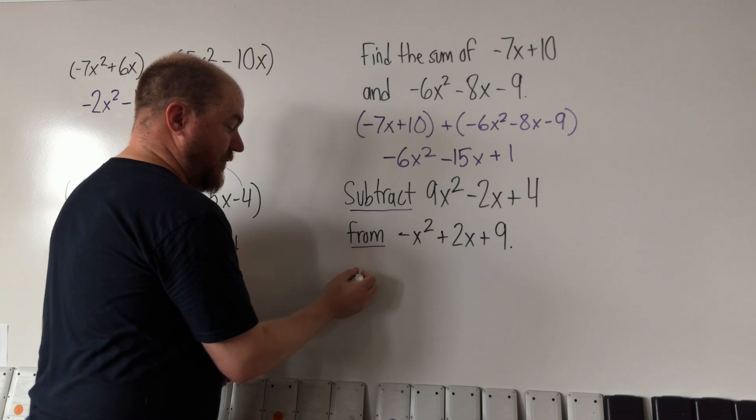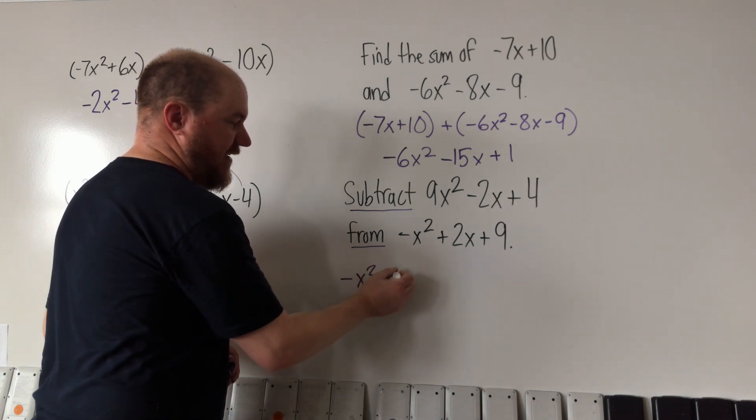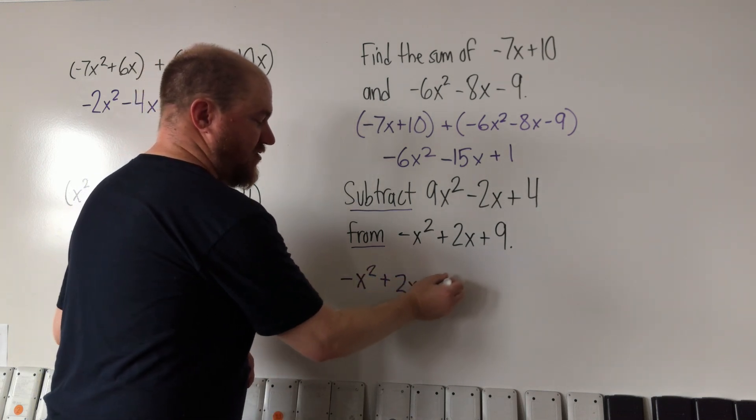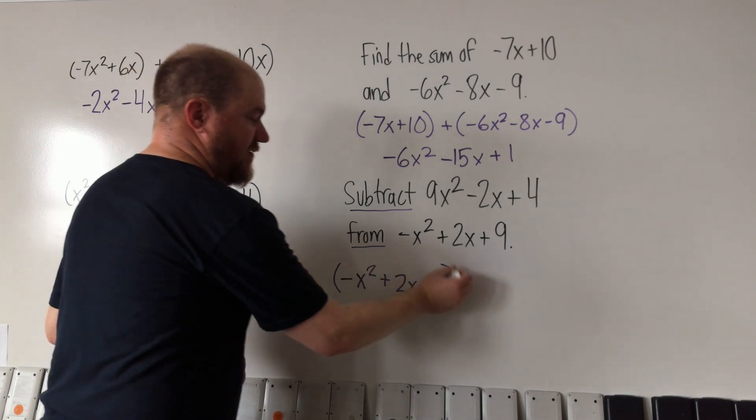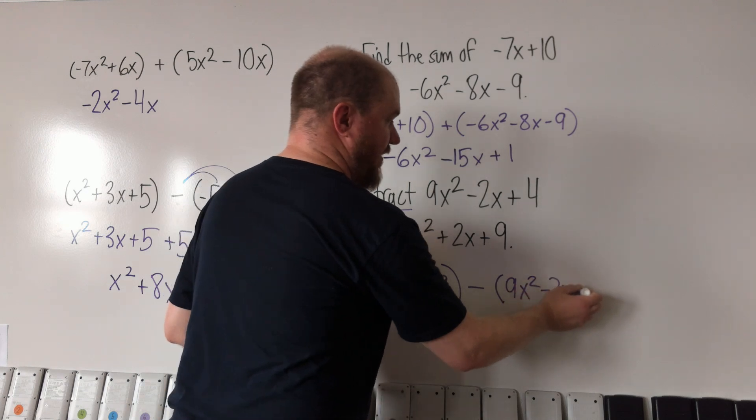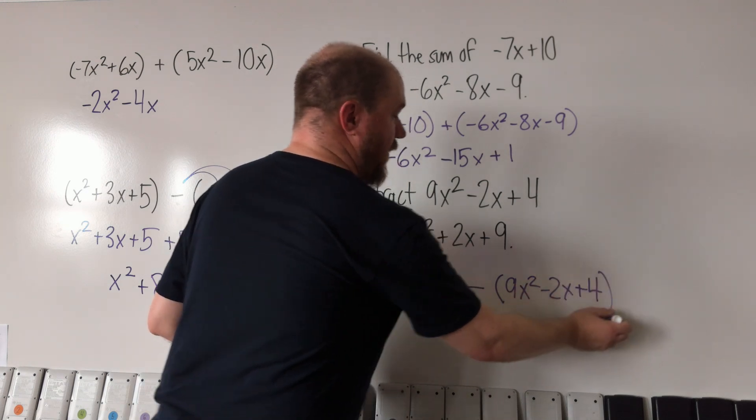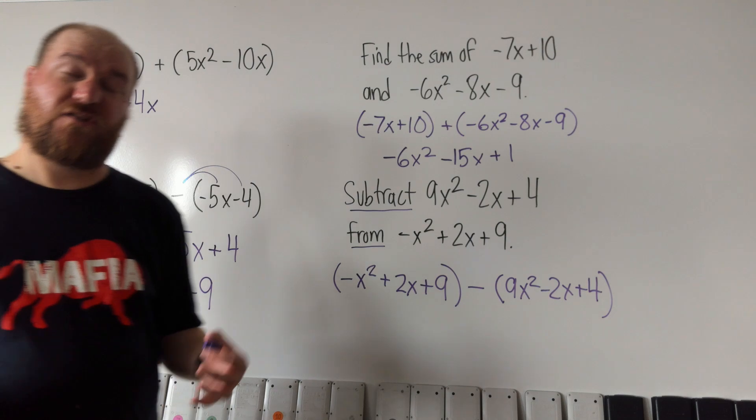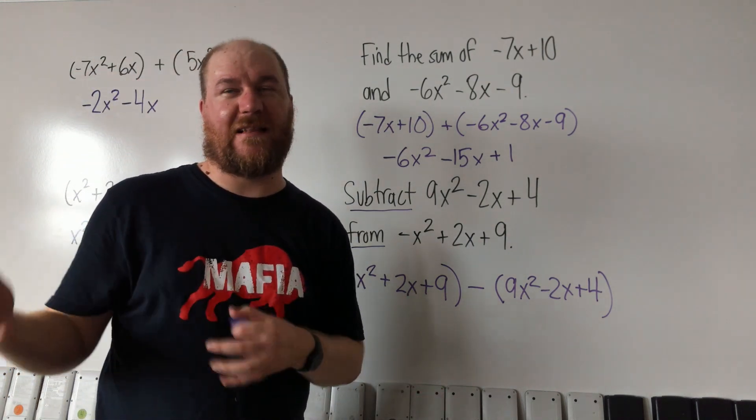So the problem that's actually happening here is negative x squared plus 2x plus 9 is being subtracted by 9x squared minus 2x plus 4.